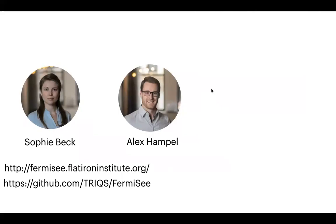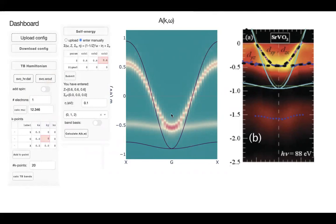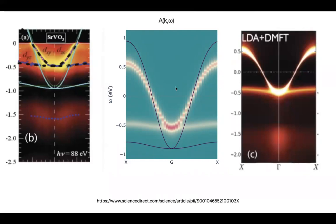I should also mention a really cool tool built by Sophie Beck and Alex Hampel at the Flatiron Institute, where you can learn how these things work using a band structure from DFT or one you create, and you can add an effective mass renormalization and see how your bands look in Fermi liquid theory — comparable to ARPES, DFT, and DMFT results — all in a browser in seconds.